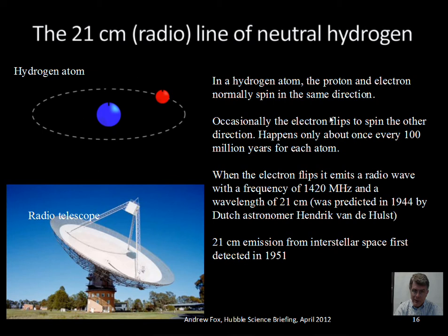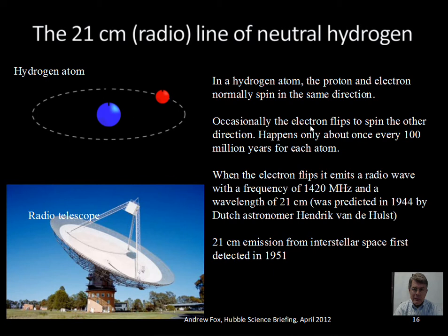Out in our galaxy, collisions can bump the electron to a different spin state — to a higher energy level — and then it drops back down. It doesn't change its orbit, just the direction of its spin. If an atom is left by itself in this high-energy condition with the spins of the electron and proton aligned, you might wait a hundred million years for that spin to change state. But there is a lot of hydrogen in our galaxy, so there is noticeable radio emission from this process of electrons changing their spin direction relative to the proton's spin.